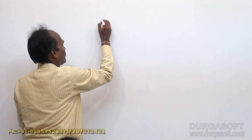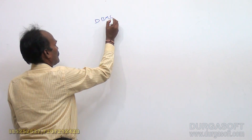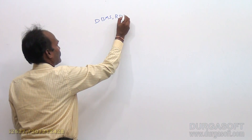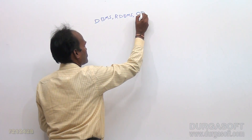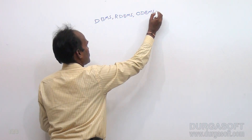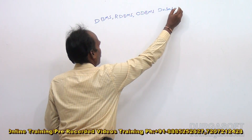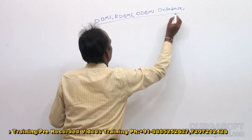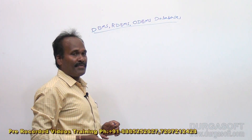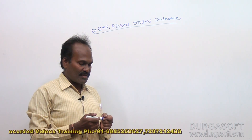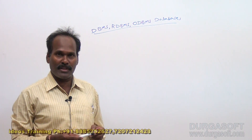First, let us see what is DBMS, RDBMS, ORDBMS, and ODBMS databases. As we discussed in the very beginning session, DBMS and RDBMS differences we have discussed. What are the differences? DBMS is nothing but Database Management System. RDBMS means Relational Database Management System.